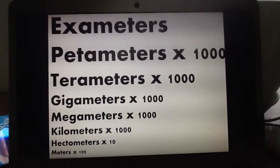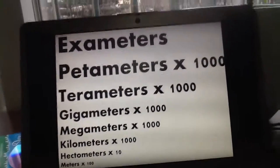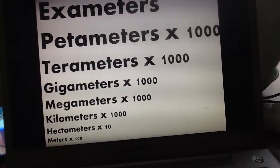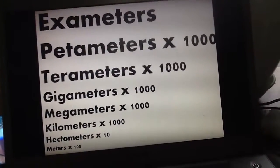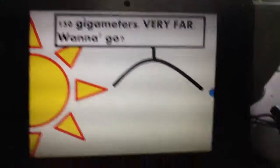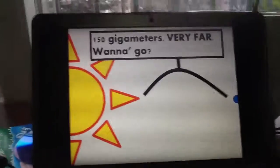To give a sense of how big these are, the galaxy is about 30 exameters. The distance to the sun and the earth, seriously not to scale, is 150 gigameters. Very far.